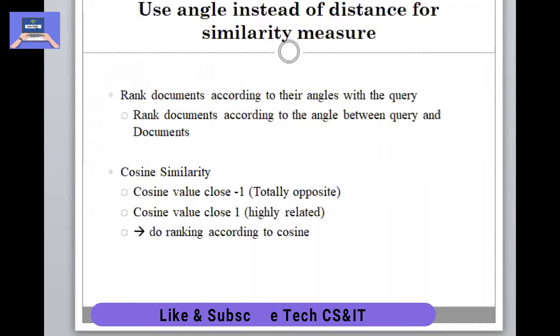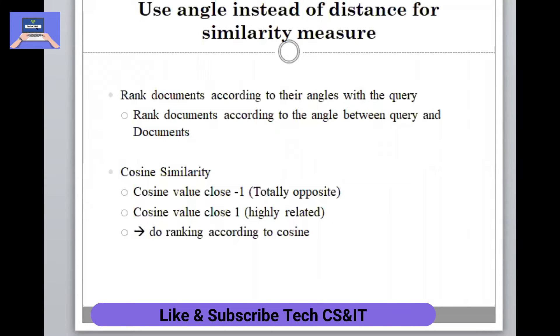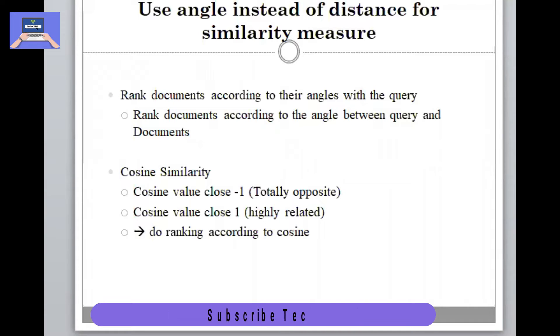The cosine similarity value, as we've already seen in the vector plot: if the value is closer to one, that document is relevant to the query term; if it is closer to minus one on the y-axis, that means it is totally opposite — not relevant.